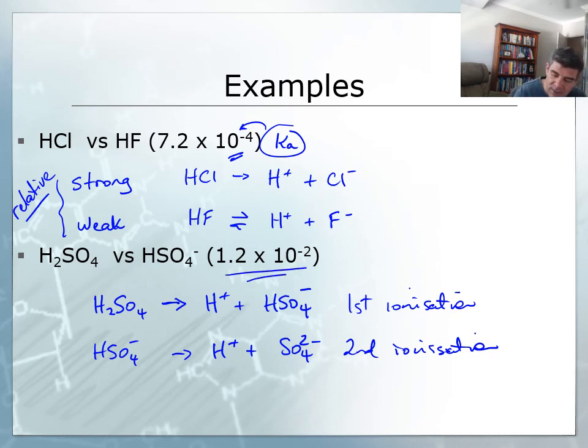But in actual fact we can see that the order of magnitude is actually larger than the previous one. So this is stronger. If we were to compare HSO4- with HF, we would say HSO4- is stronger because it has a larger Ka value.